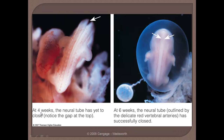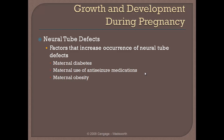At four weeks, the neural tube is still open and has yet to close. By six weeks it has fully closed. Sometimes the neural tube will remain open if there is not an adequate amount of folate, resulting in major birth defects. You can search Google Images for neural tube defects to see some graphic examples. In particular, spina bifida is the one we see most commonly.